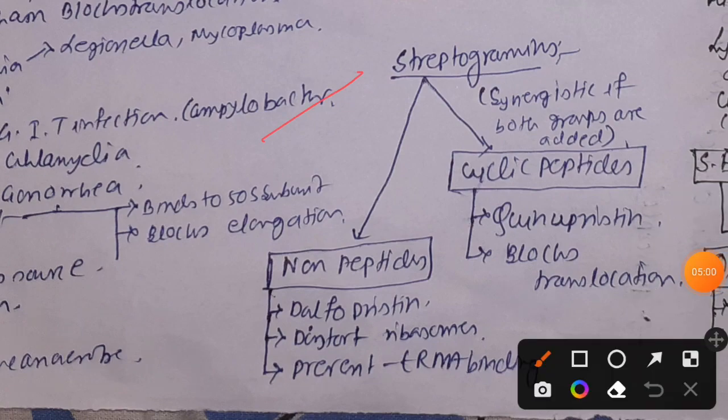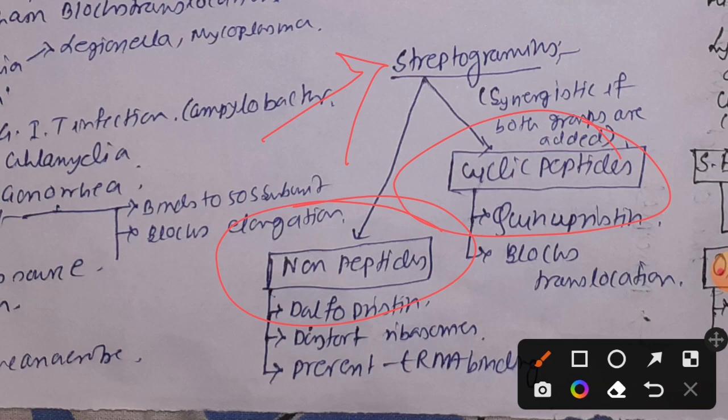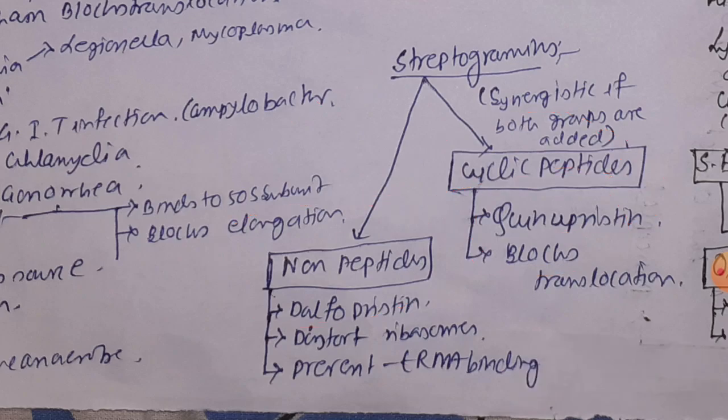Streptogramins are of two types: non-peptide and cyclic peptide. The non-peptide example is dalfopristin, which distorts the ribosome so that tRNA cannot bind, preventing amino acid insertion and inhibiting protein synthesis. The cyclic peptide example is quinupristin, which blocks translocation.